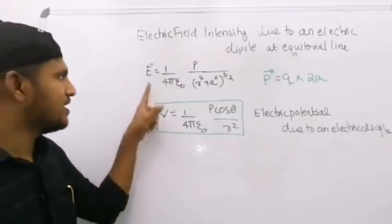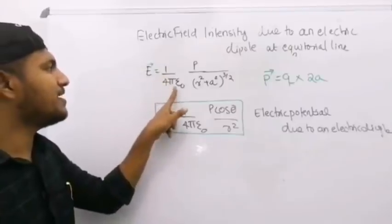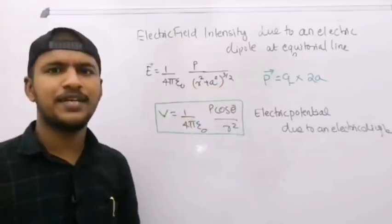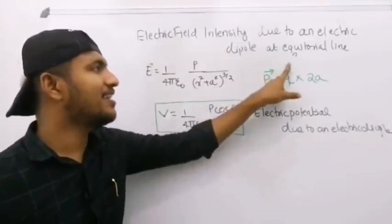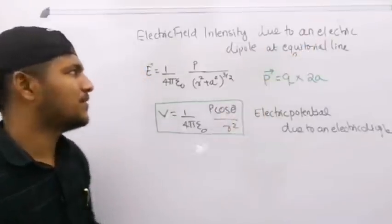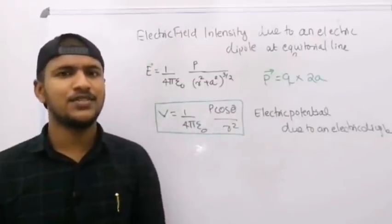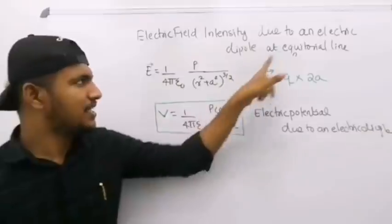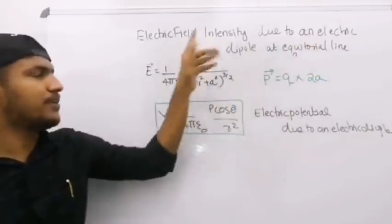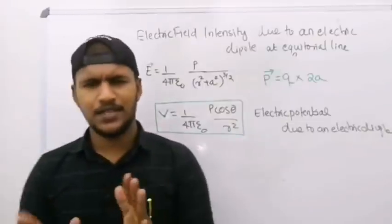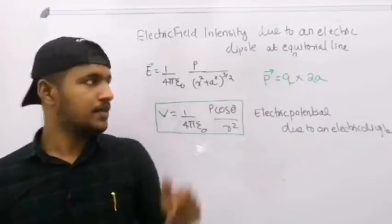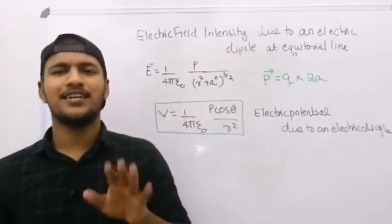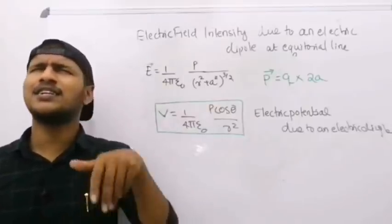Is equal to 1 by 4 by epsilon 0, P by R square plus A square, all raised to 3 by 2. Equatorial line electric dipole electric field intensity — that is the equation.